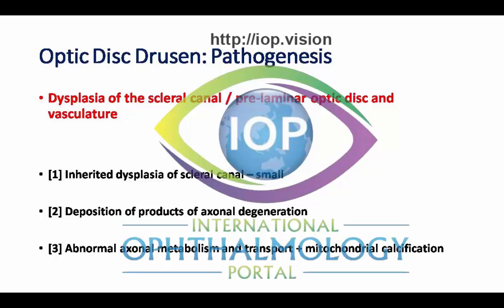We don't fully understand the pathogenesis of optic disc drusen. What we think is that there is an acquired or inherited dysplasia of the scleral canal, the pre-laminar optic disc tissue, and the optic disc vasculature. It's generally felt that this inherited dysplasia of the scleral canal leads to a smaller than normal scleral canal opening. Drusen are thought to be deposition products of axonal degeneration, and a common theme among the various pathogeneses suggested is one of hold-up of axoplasmic transport.